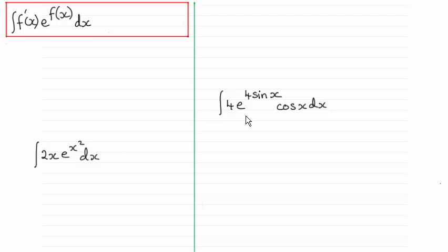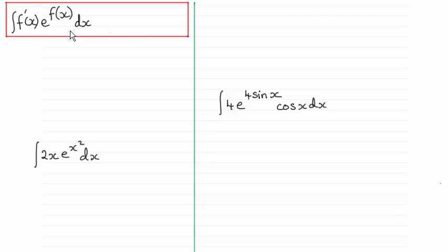In this second example we've got e to the 4 sin x, so f of x is 4 sin x, and if you differentiate 4 sin x you get 4 cos x. So again it's got this particular form. When it comes to handling integrals like these we don't use integration by parts — it's a special result, as I'll show you.